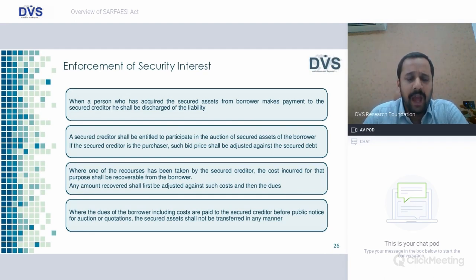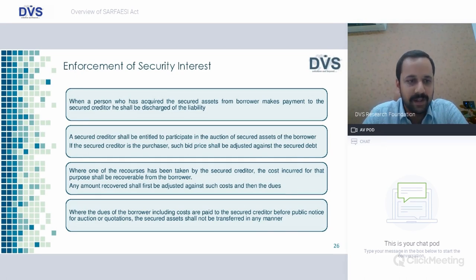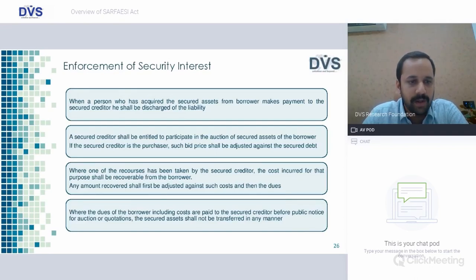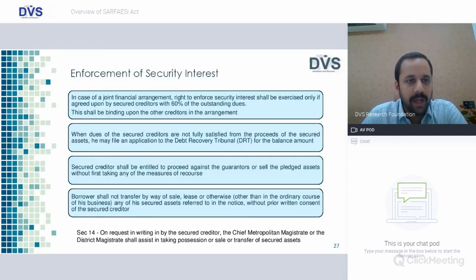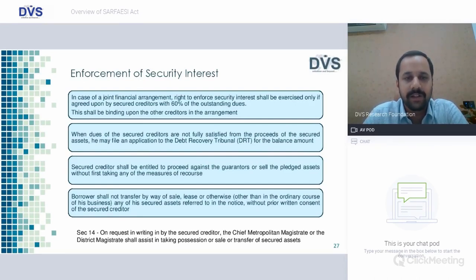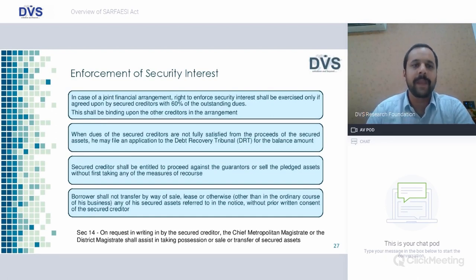After issue of notice, if a borrower agrees and makes payment, any expenses incurred by the secured creditor must be compensated by the borrower and duly paid before the asset can be released. Any amount received shall first be adjusted against such cost and then only towards the dues. Where dues of the borrower including costs are paid to the secured creditor before public notice for auction or quotations, the secured asset shall not be transferred in any manner.